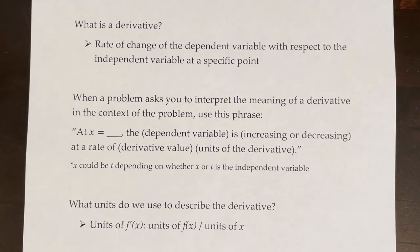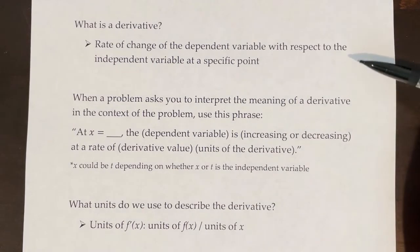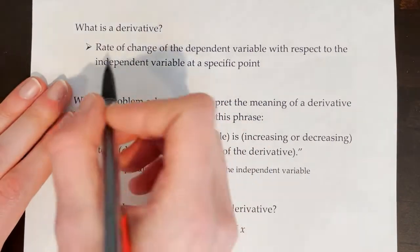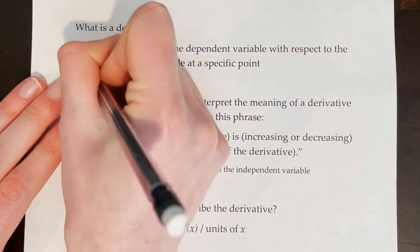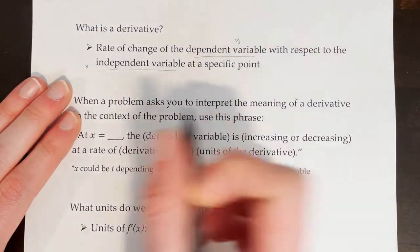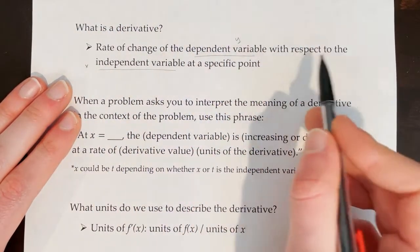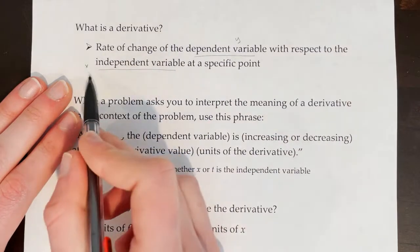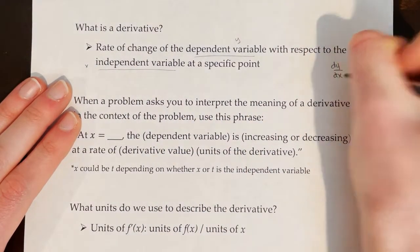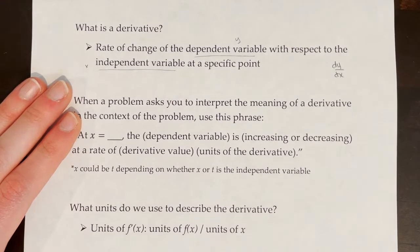First, let's review what a derivative actually is. A derivative is the rate of change of the dependent variable with respect to the independent variable at a specific point. So if we think about the independent variable being x and the dependent variable being y, we could also say this is the rate of change of y with respect to x at a specific point, or dy/dx, which is notation that you should be familiar with at this point.